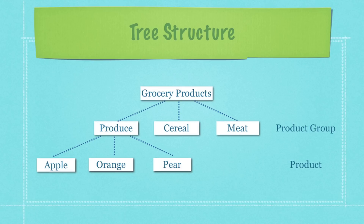By a tree structure, I'm referring to something like setting up a grocery store with different product groups — produce, cereal, meat — and then creating all of the products and attaching them to those groups, such as apple, orange, and pear attached to produce. When modeling a tree like this, you can either list the information as primitives and search through gigantic classes that have product group and product inside them, or you can create objects that represent each level of the tree. The perfect pattern for doing that is the composite pattern.